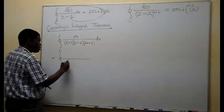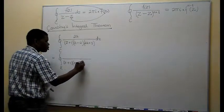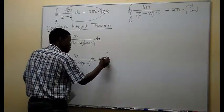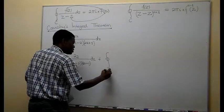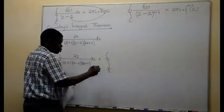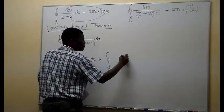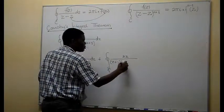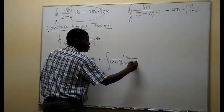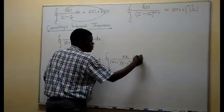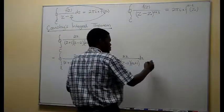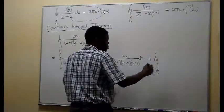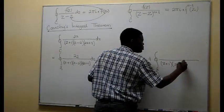So the integral around C equals the integral around gamma 1, which contains only one pole, plus the integral around gamma 2, which is the second closed path containing only one pole, plus the integral around gamma 3 containing the remaining pole.